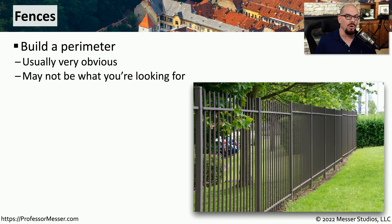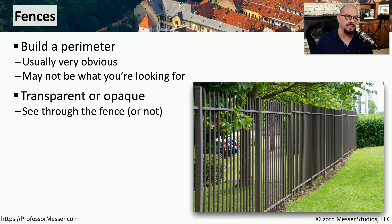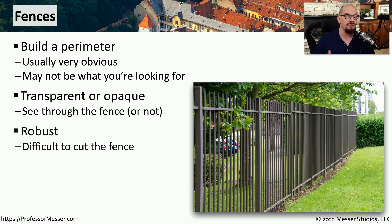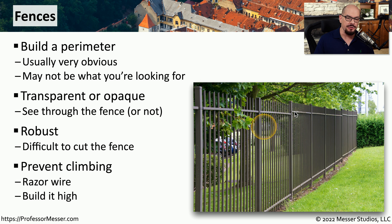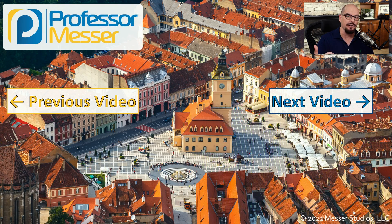Whether you're at home or at work, a very common physical control is a fence. This is a type of control that is very obvious — everybody can see that a fence is in place, which may or may not be the type of security you're looking for. However, there are lots of different options: you can get them in different heights and use different materials, some that you might be able to see through, or opaque where you have no idea what's on the other side. These are usually very well built, and it's very difficult to find a way through without using heavy machinery. If it's a lower fence, someone may be able to climb over it, which is why in very secure environments you may find razor wire at the top and the fence may be much higher.